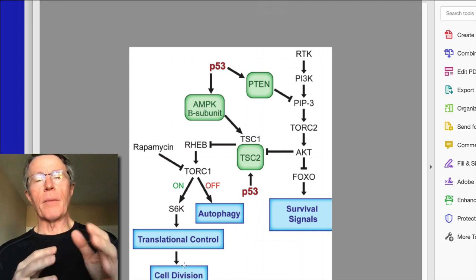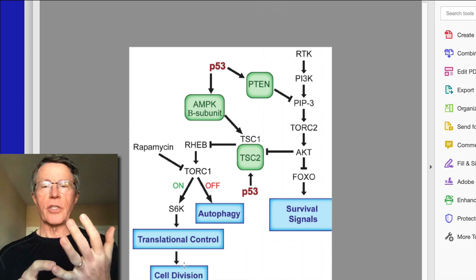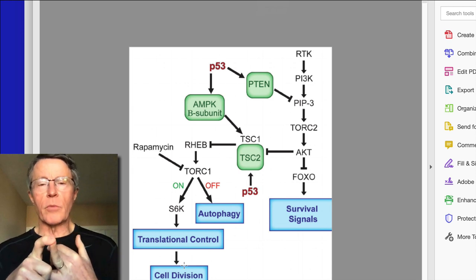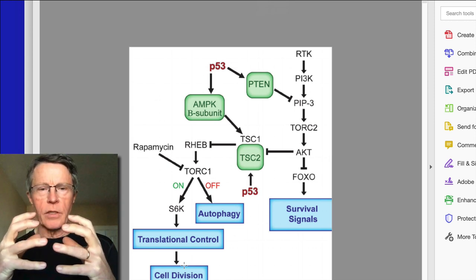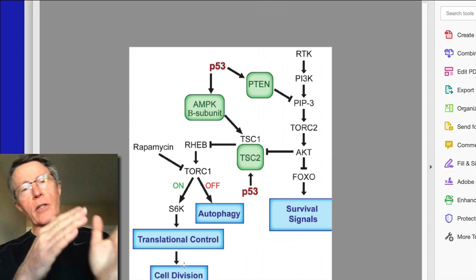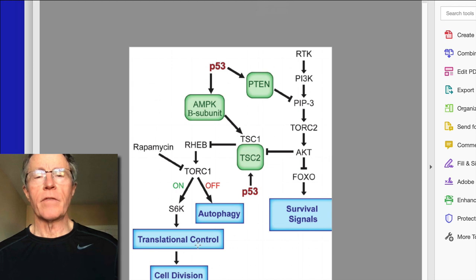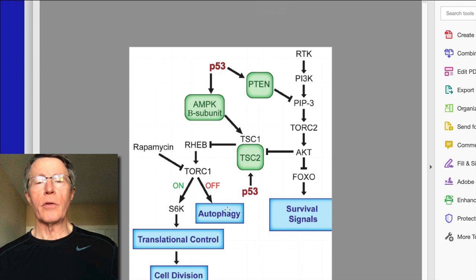On the other hand, if rapamycin is present it's going to shut that off. If there's insufficient growth hormone or IGF-1, if there's insufficient lysosomal proteins — lysosomes being the cleanup and recycling bins within the cell — and inadequate energy, then it'll go more towards the autophagy side. It appears that autophagy does have a lot of longevity components to it.